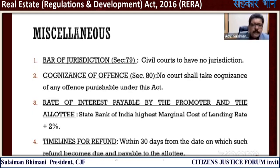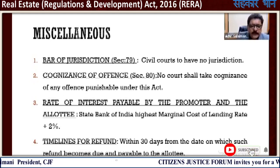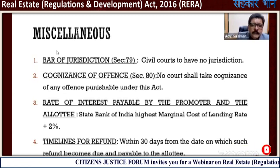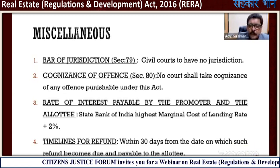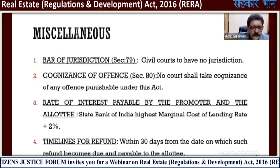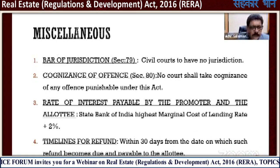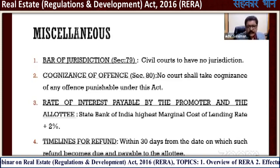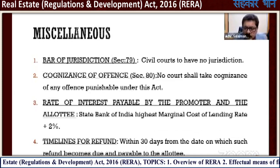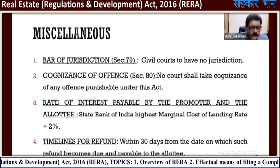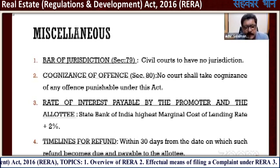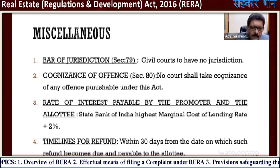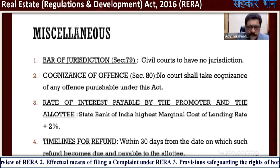You cannot approach this type of dispute to the city civil court or to the High Court directly. Cognizance of offence — Section 80: no court shall take cognizance of any offence punishable under this act. Rate of interest payable by the promoter and the allottee: the State Bank of India's highest marginal cost of lending rate plus two percent. Nowadays, State Bank of India is charging 7%, so 7 plus 2 equals 9%. This applies to both allottees as well as the promoter.